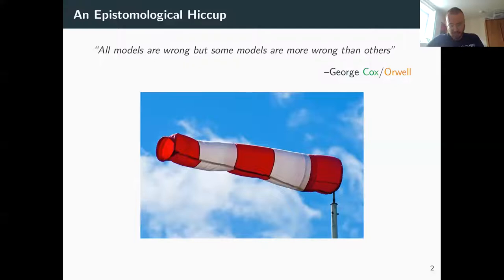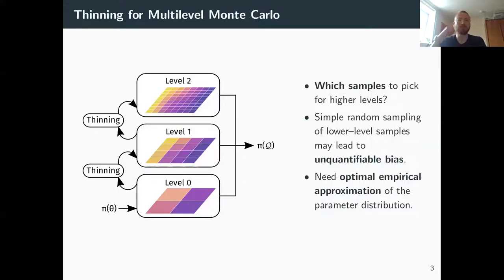First, motivating. It's a little bit of a joke but I think it's also true: all models are wrong, but some models are more wrong than others. It's a hybrid quote by George Box and George Orwell. I just put up this windsock here because that's like my favorite example of a minimal inverse problem. You can observe it and it shows you where the wind is coming from.